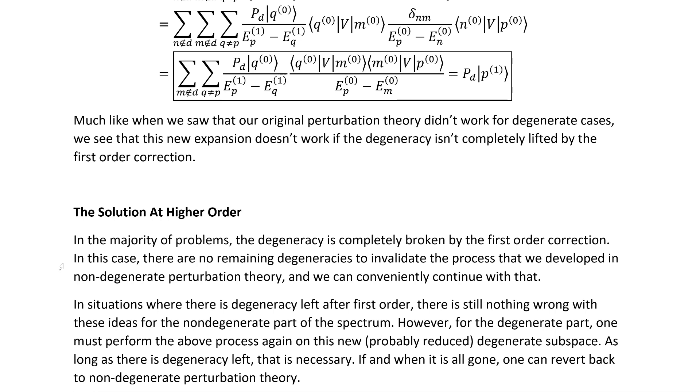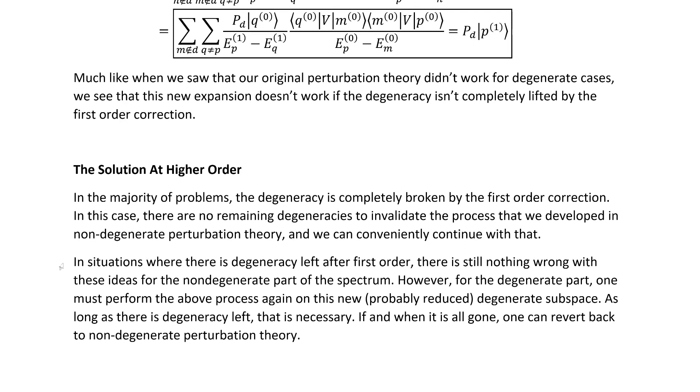In situations where there is degeneracy left after first order, there is still nothing wrong with these ideas for the non-degenerate part of the spectrum. However, for the degenerate part, one must perform the above process again for this new, probably reduced, degenerate subspace is left over. Usually, it's reduced because even when the first order correction doesn't completely break the degeneracy, it often at least breaks some of it. As long as there is degeneracy left, repeating the process that I've shown you here is necessary. If and when it is all gone, one can revert back to the non-degenerate perturbation theory at that point. And of course, that makes things much easier.